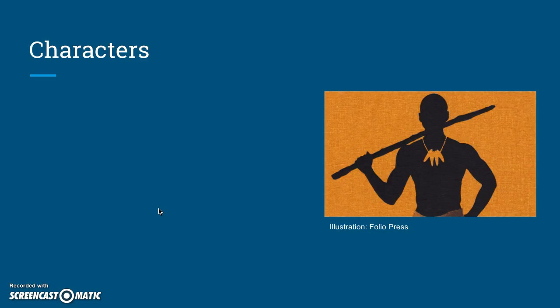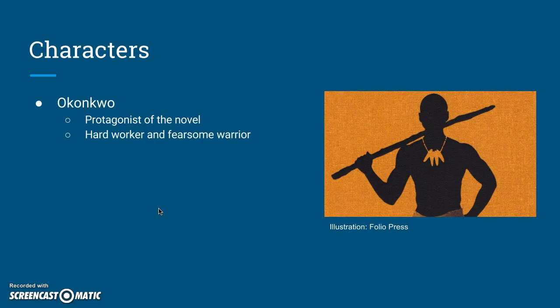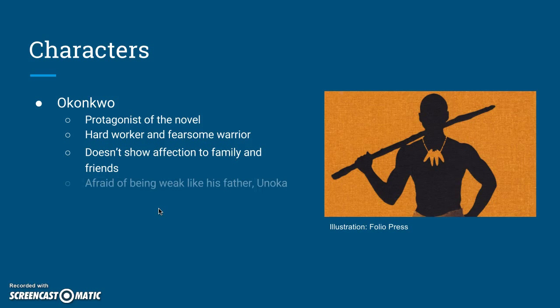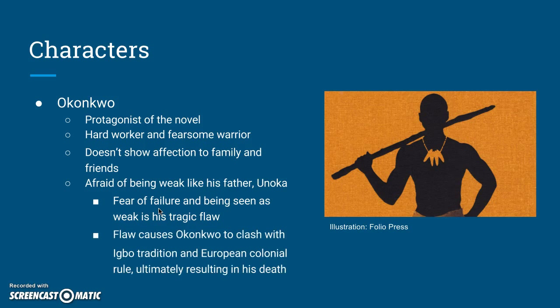Our main character is Okonkwo — the character the novel follows and fleshes out the most. He is a hard worker and a very fearsome warrior, as shown by his wealth, his three wives, and his status as a respected clansman. But he doesn't show much affection to his family and friends, and a lot of this stems from his fear of being weak like his father, Unoka. This fear of failure is ultimately his tragic flaw — it causes him to act very rashly, clash with Igbo tradition and European colonial rule, and ultimately results in his death at the end of the novel.